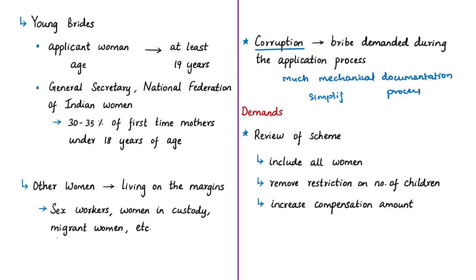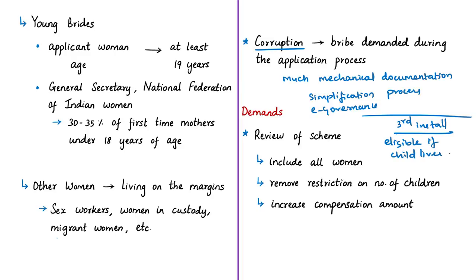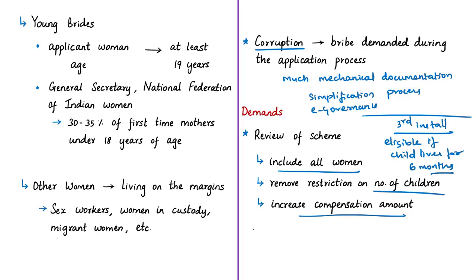The third installment of ₹2,000 is given only if the child lives for six months after birth. If the child dies before six months, the beneficiary is not eligible for that installment. Human rights defenders and activists are therefore demanding a review of the scheme to include all women, remove the restriction on number of children, and increase the compensation amount. They demand that total assistance be at least on par with minimum wages for women in self-employment — raising it to around ₹10,000 from the present ₹5,000.